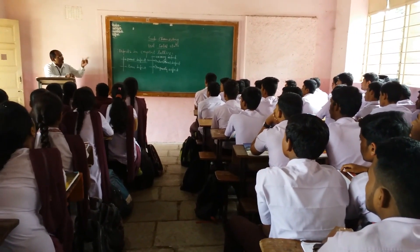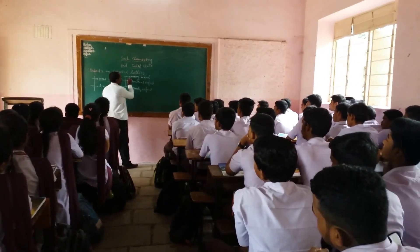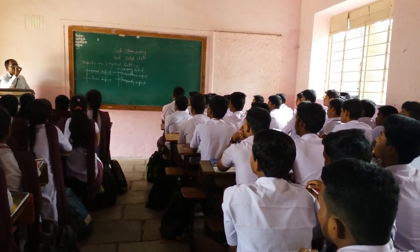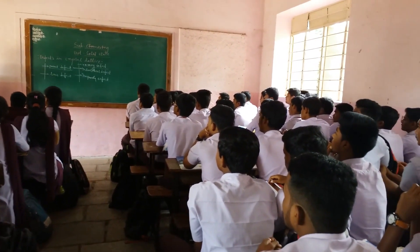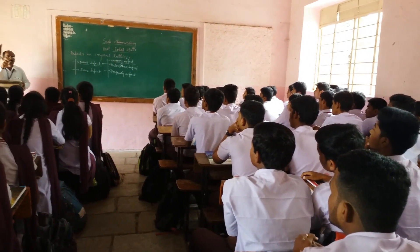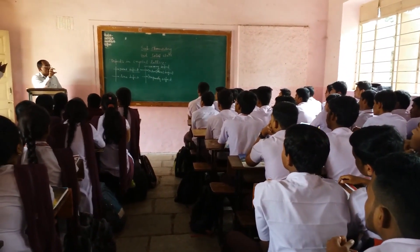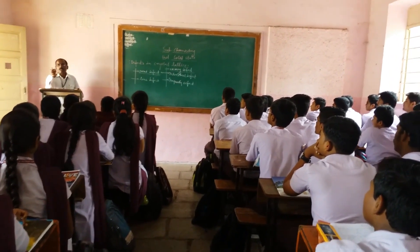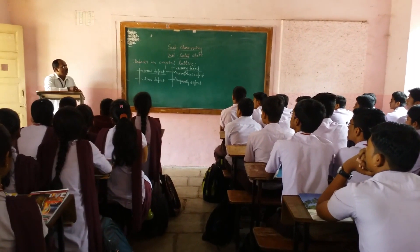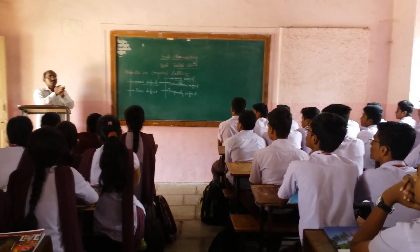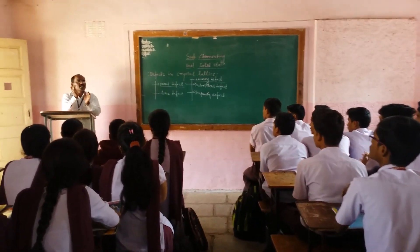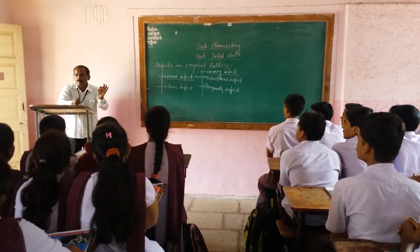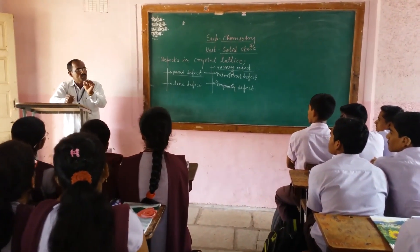First, we take up vacancy defects. What is meant by vacancy? According to the arrangement of crystal structure, some constituent particles are arranged regularly but some constituent particles — either your atom, ion, or molecule — are absent or have missed their position in the development of that structure. That defect is called vacancy defect, which means vacancies are produced in the structure of that crystal lattice.